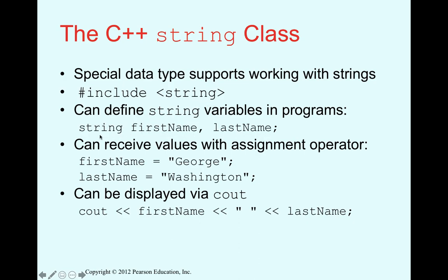To define a string variable, we write the word 'string' followed by the variable name. In this example, we define two variables called 'first_name' and 'last_name' of type string in the same line. We can also give values to the variables using the assignment operator, so first_name equals 'George' and last_name equals 'Washington'.